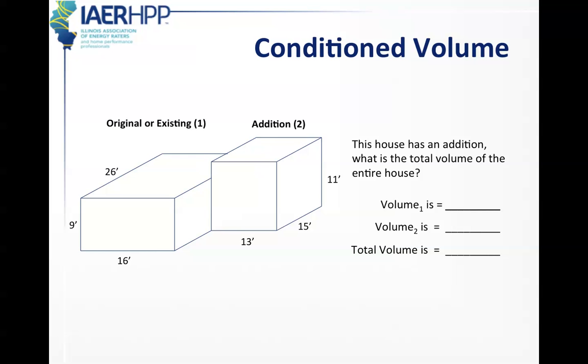Now, you might come up against a house that looks like this with two distinctly different shapes. Just like we added together the areas of rectangles, we can add together the volumes of different shaped cubes. The volume of number one is 16 feet wide by 26 feet long by 9 feet high, which is 3,744. The volume of number two, 13 times 15 times 11, gives you 2,145. To figure out the total volume, we add the two together, and we would get 5,889 cubic feet.